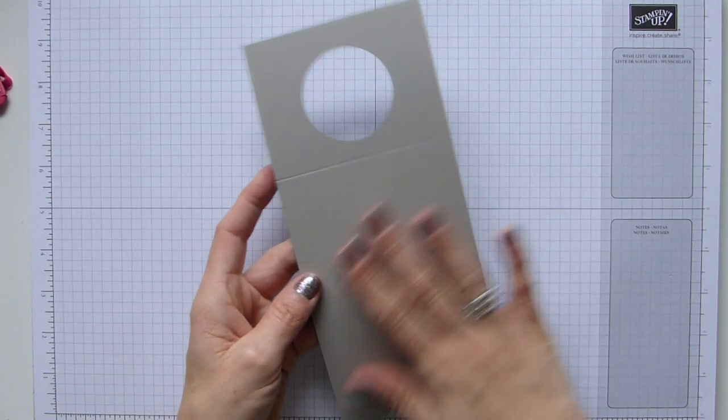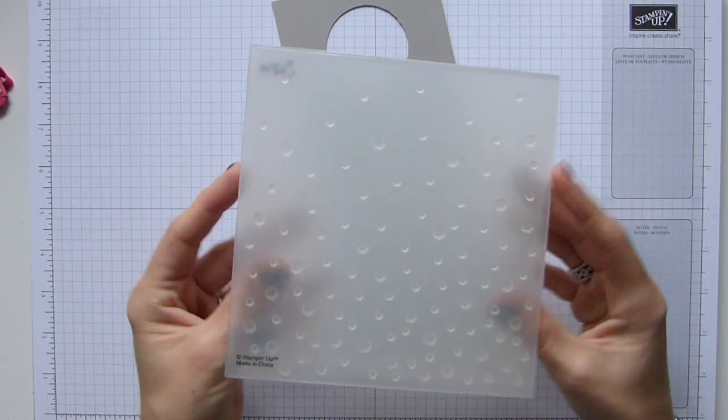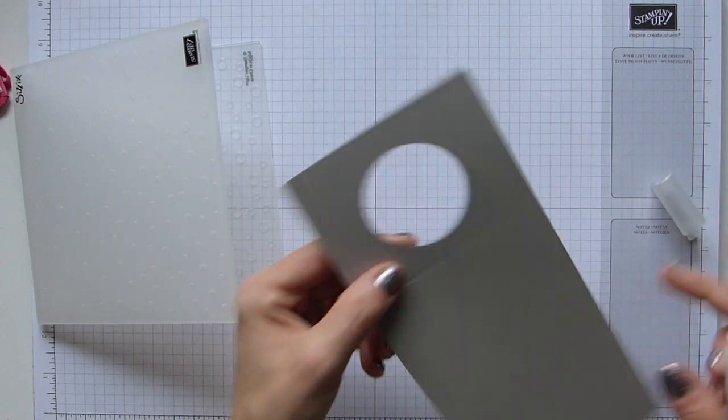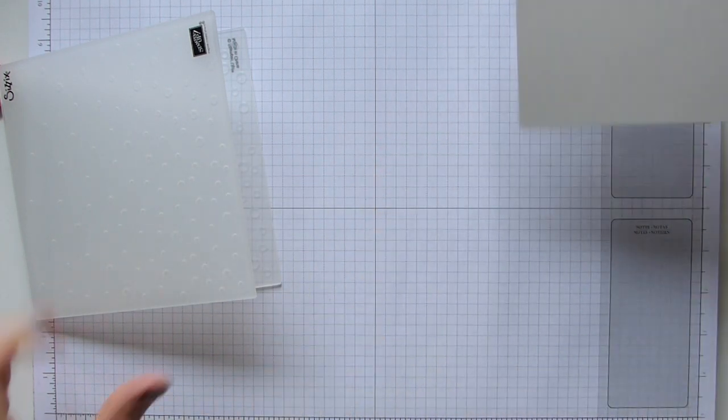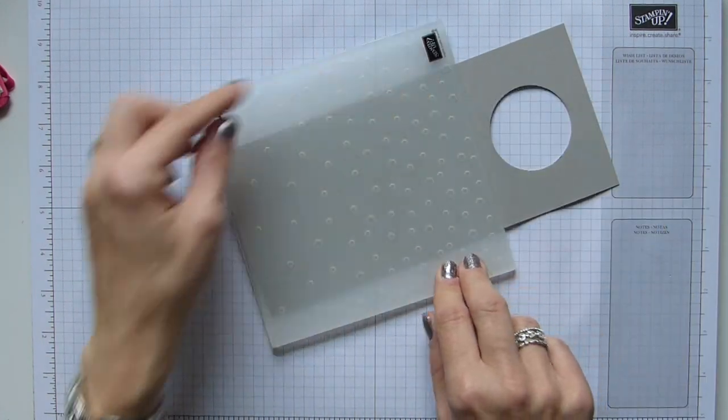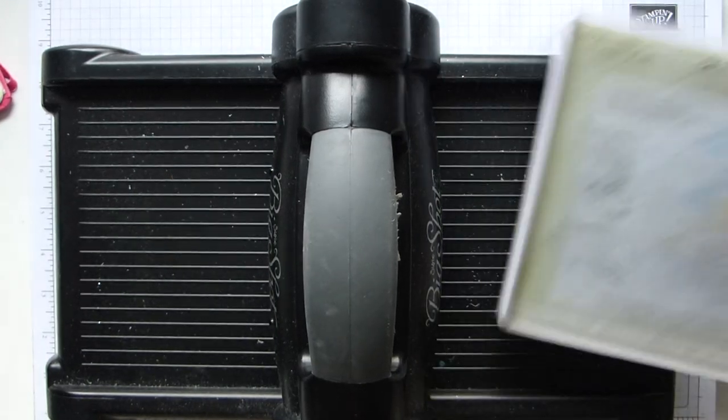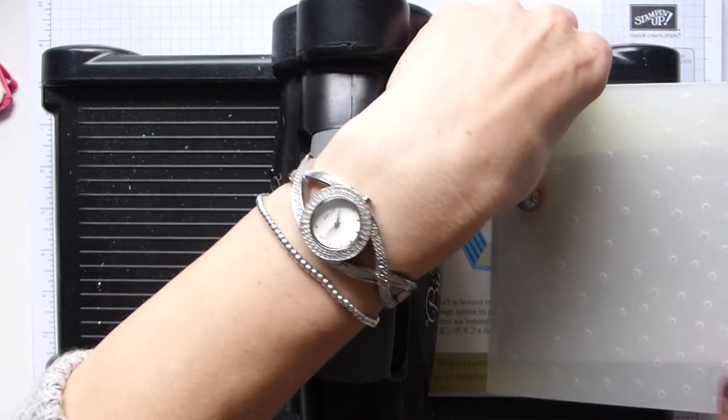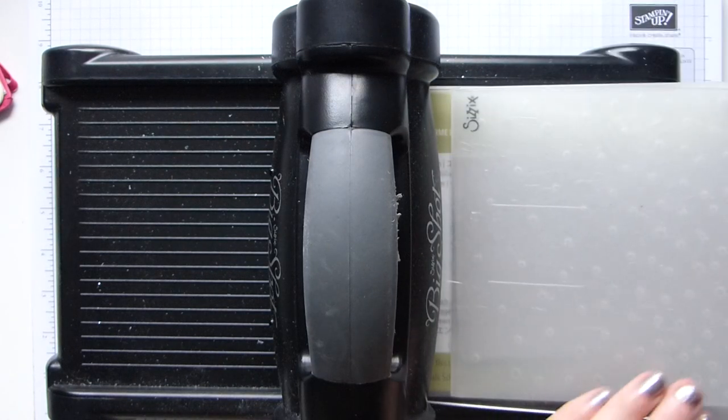Once you've done that, we then want to run this pretty little bit of cardstock through the embossing folder. I have used the scattered sequins, which I think is lovely. I've got my spritzer just to stop my card from cracking and creasing too much. This will actually fit perfectly in your folder. This is a dynamic embossing folder, therefore all I need is my big shot platform. Pop your embossing folder on your platform, making sure that the join goes in first.